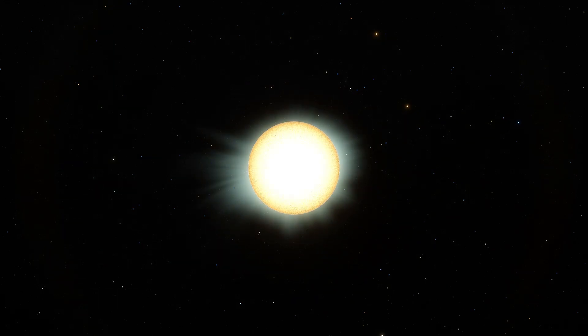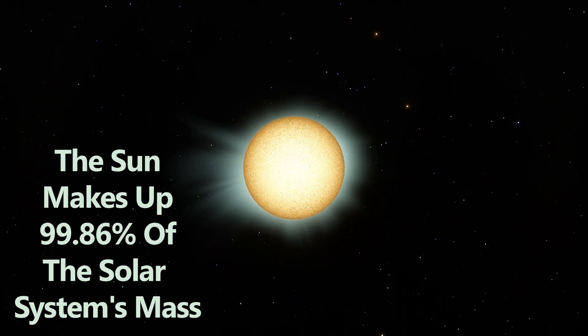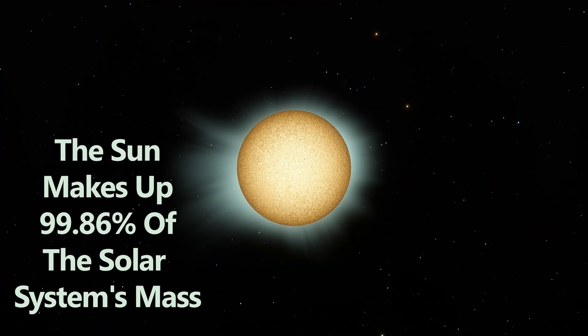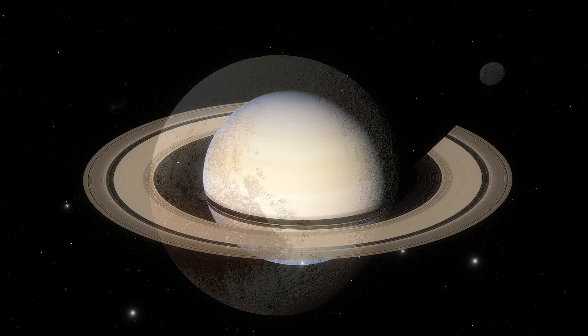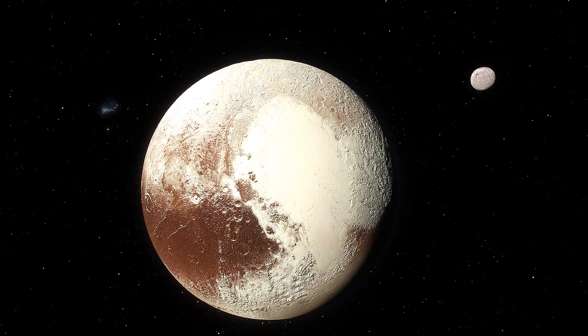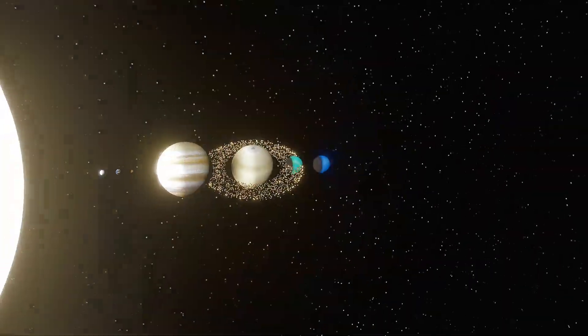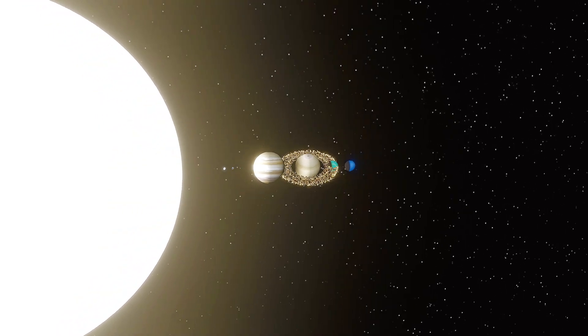Our star, the Sun, contains an incredible 99.86% of the total mass of the Solar System. All of the planets, dwarf planets, moons, and everything else together only account for a very small fraction of the mass.